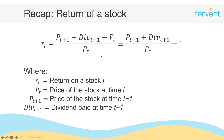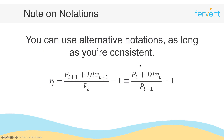Just one last thing before we use this with real-world data: remember that you can always use alternative notations as long as you're consistent. So you can define the return on stock j as pt+1 plus div(t+1) over pt minus 1, or equally as pt plus div(t) over pt-1 minus 1. Either notation works as long as you're consistent, since pt+1 is just one time period ahead of pt.